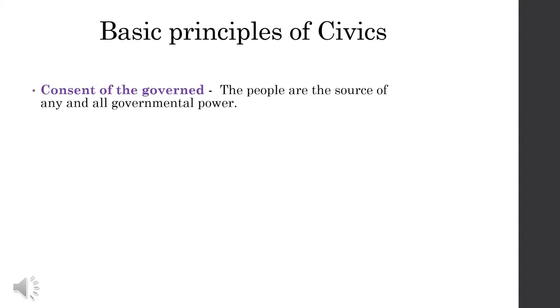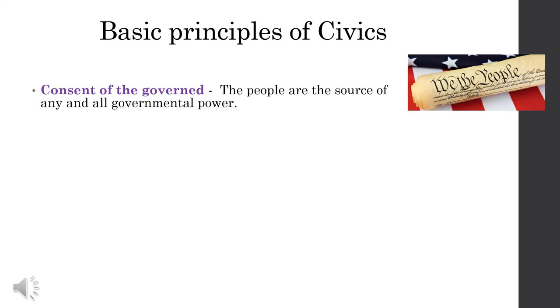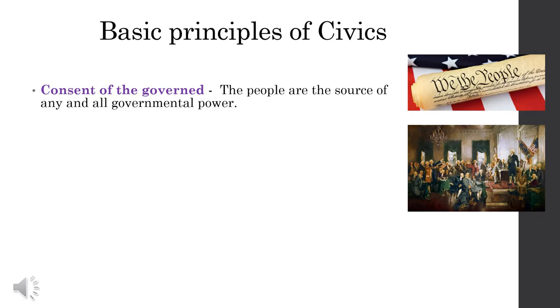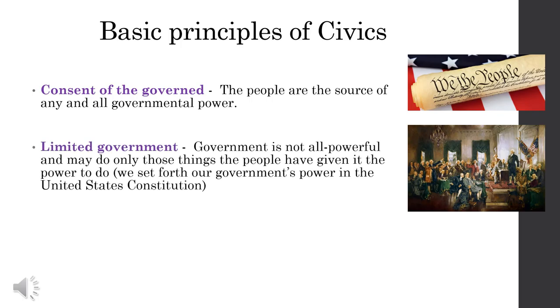Now that we've defined civics and economics, we need to understand the basic principles of each concept. The first principle of civics is consent of the governed: the people are the source of any and all governmental power. You, me, your parents, and everyone else who lives in this country — we consent to be governed in a specific way. We the people have decided to live under a certain type of government. The Founding Fathers decided that we would consent to live under something called limited government. Government is not all-powerful, and it does only those things the people have given it the power to do. We set forth our government's power in the United States Constitution.